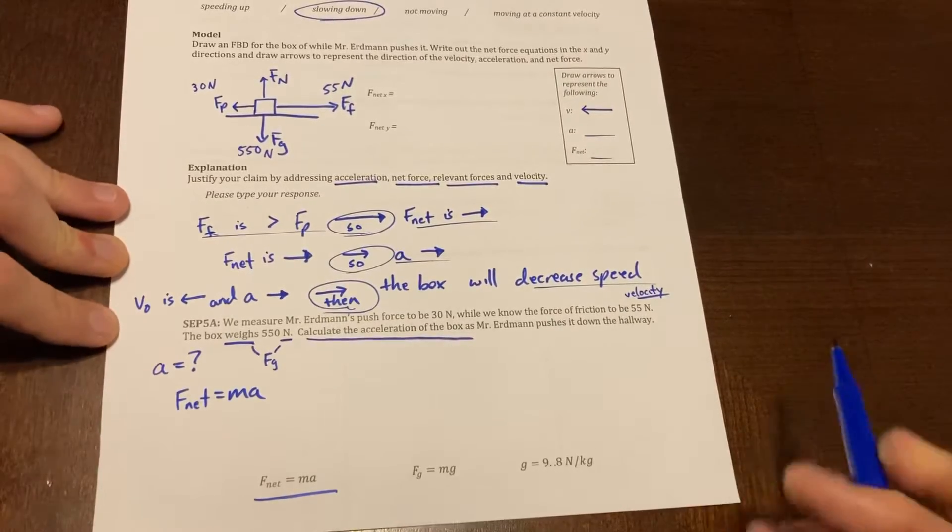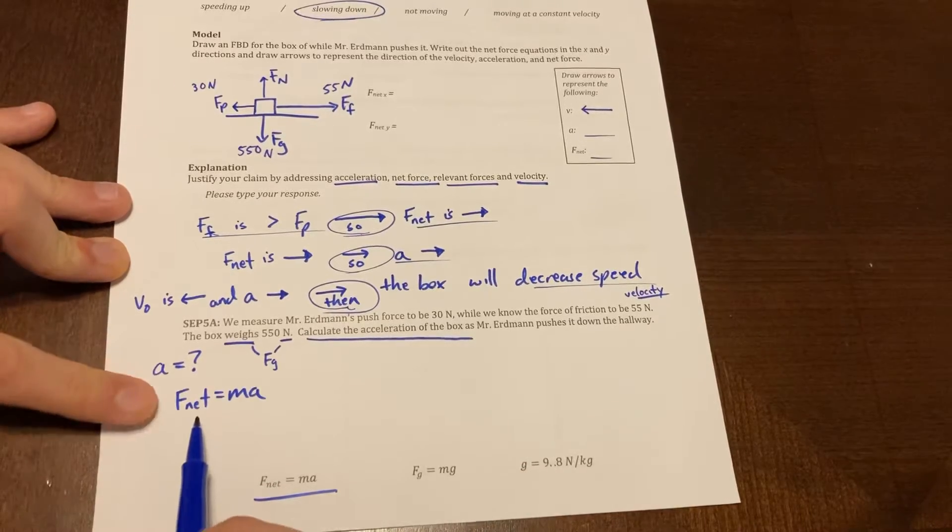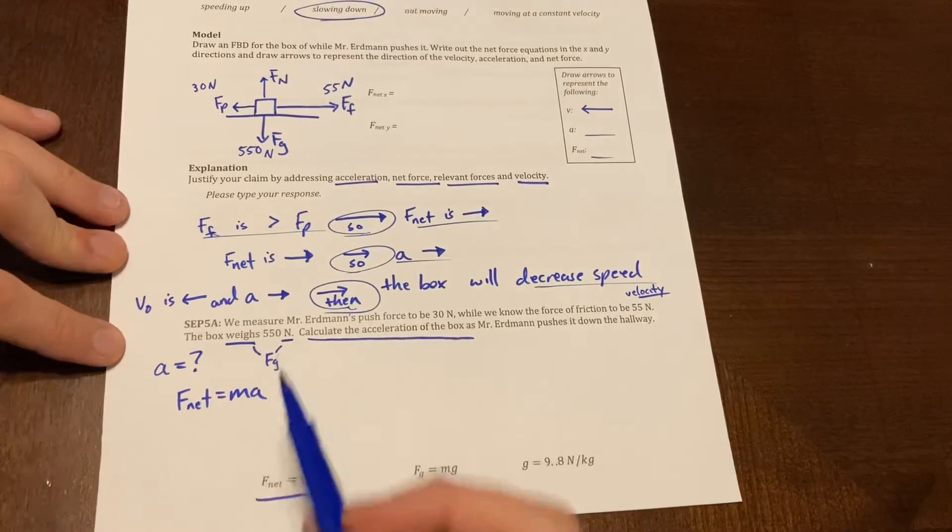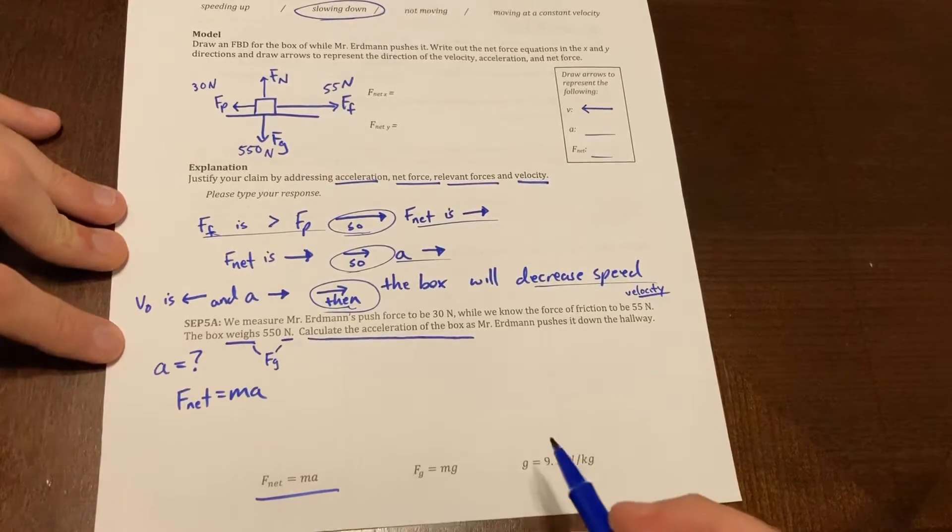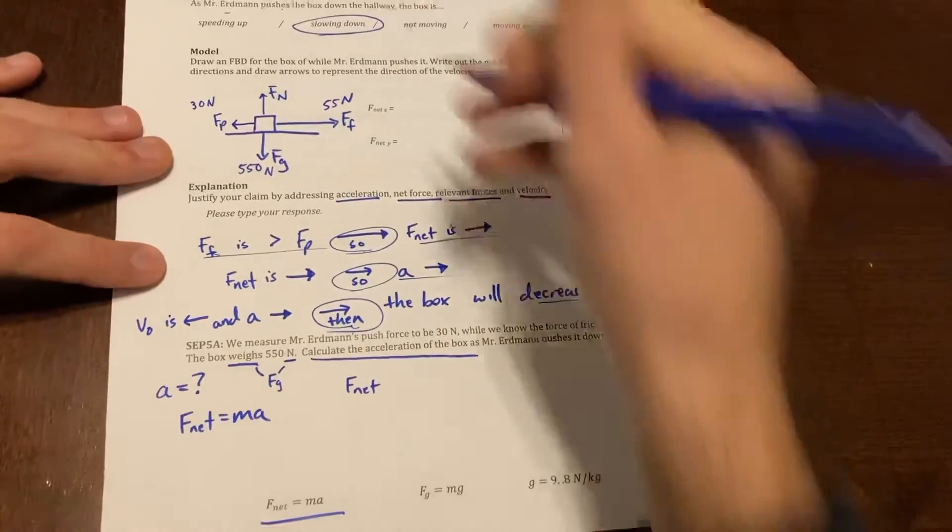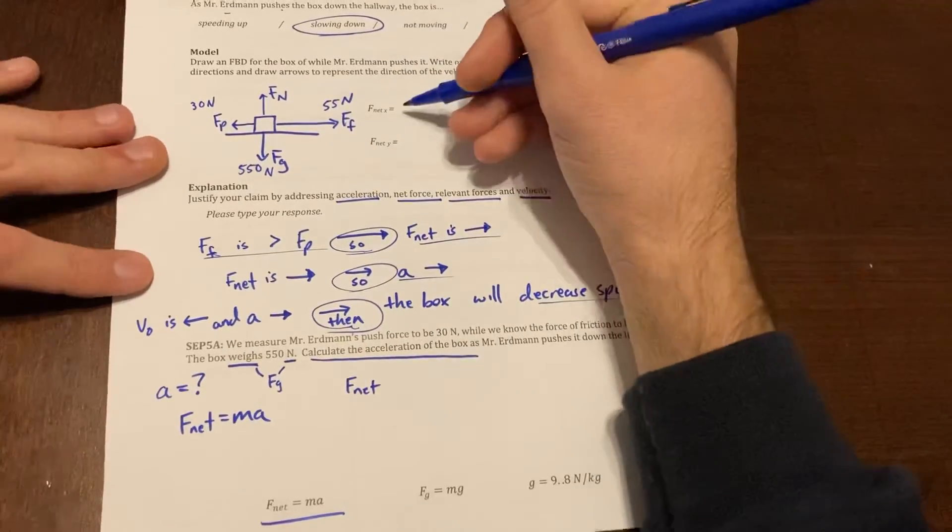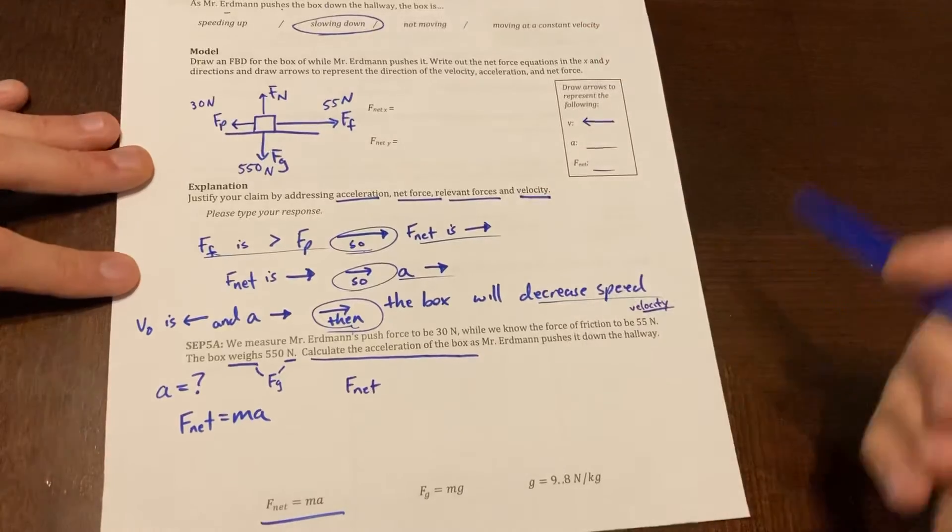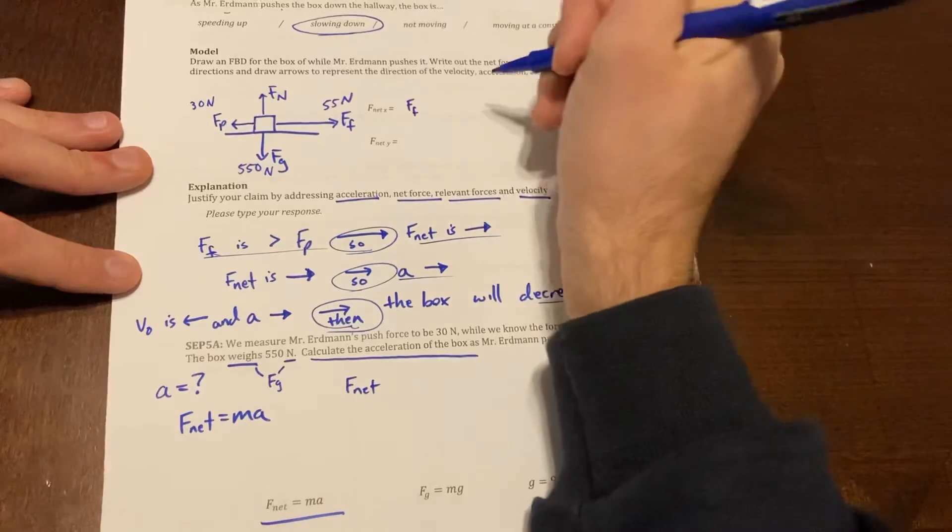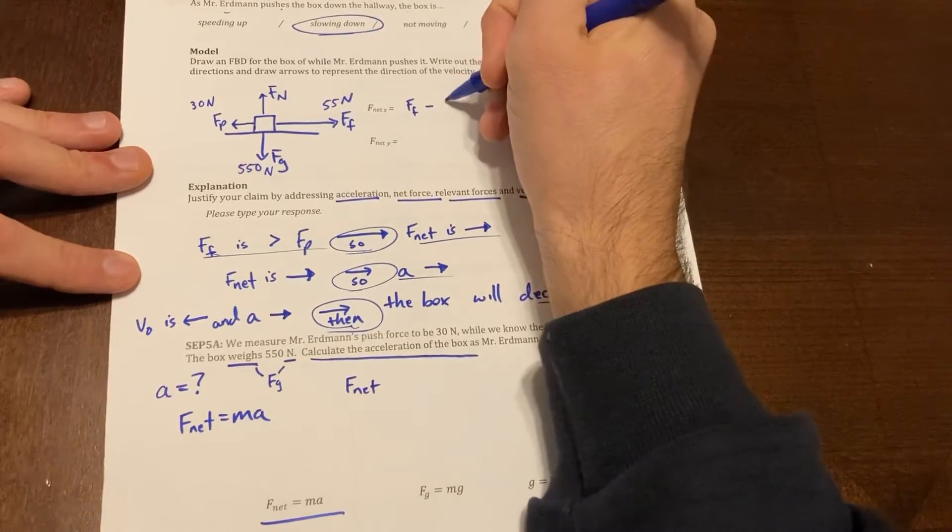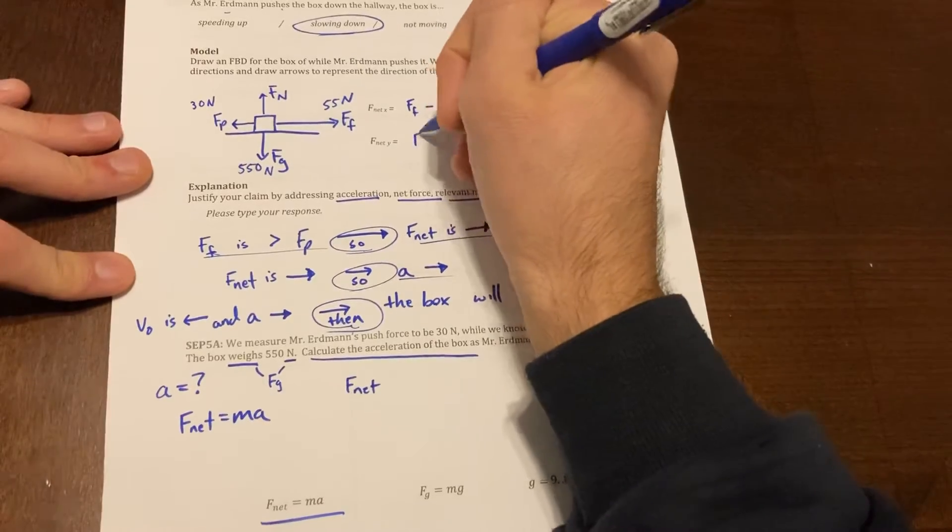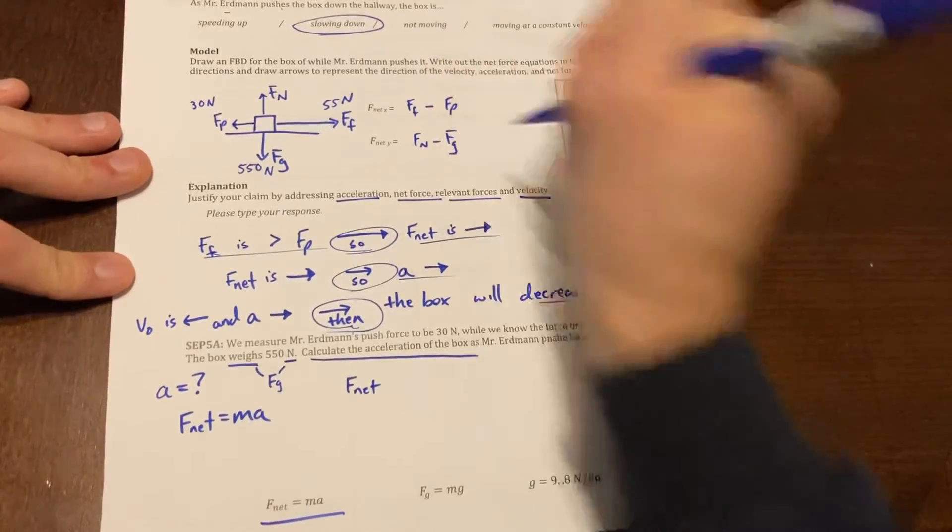So then to solve this, do I know my net force right off the bat? No, it just told me individual forces and I don't know the mass because I only know the weight. But I could find my F_net using my F_net equation. You may have drawn these already, so we have our net force in the x direction. Remember, it's always positive forces minus negative forces. So the force of friction goes first here, because it's going in a positive direction, minus the push force. And then my F_net y is my normal force minus my force of gravity.